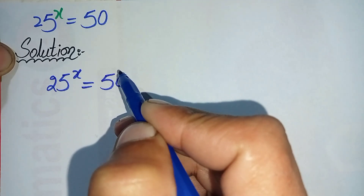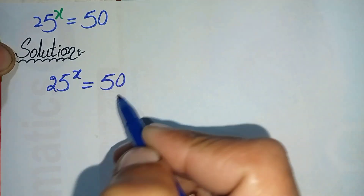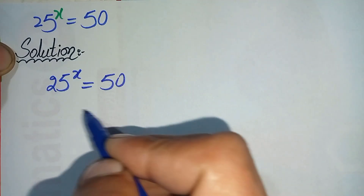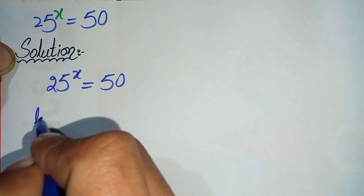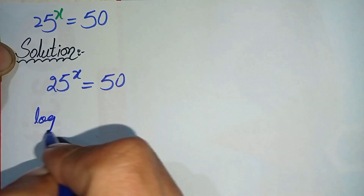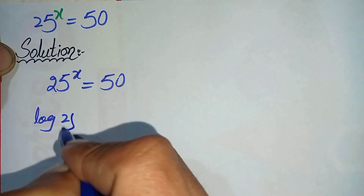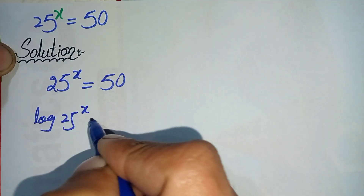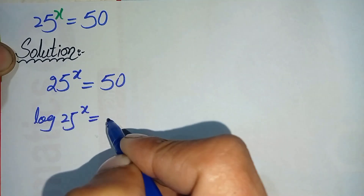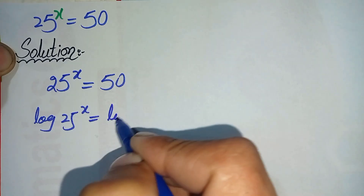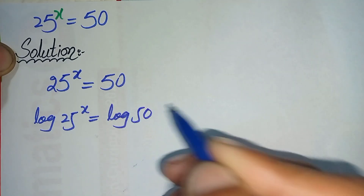To solve this question we will take the common log on both sides. So log of 25 raised to power x is equal to log of 50.